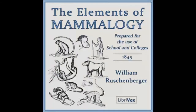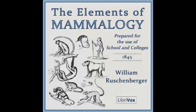Recording by Abai, May 2015. The Elements of Mammalogy by William Ruschenberger. Lesson 3: Order of Bimena — the only species, man. Anatomical characters which distinguish the body of man from that of the other Mammalia: hands, feet, station, brain, human races.